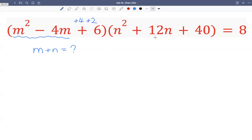And this one, 12 divided by 2 is 6. Then 6 squared is 36. So we want to split 40 as 36 plus 4. Then these three give us a perfect square. These three give us a perfect square.